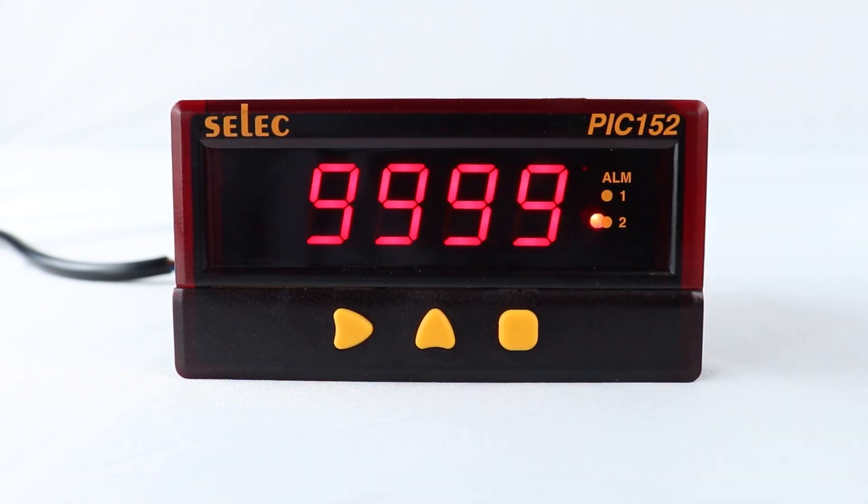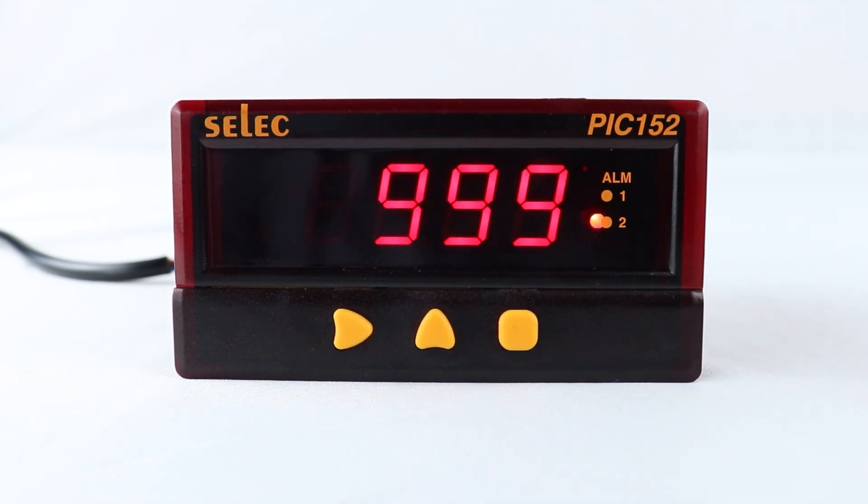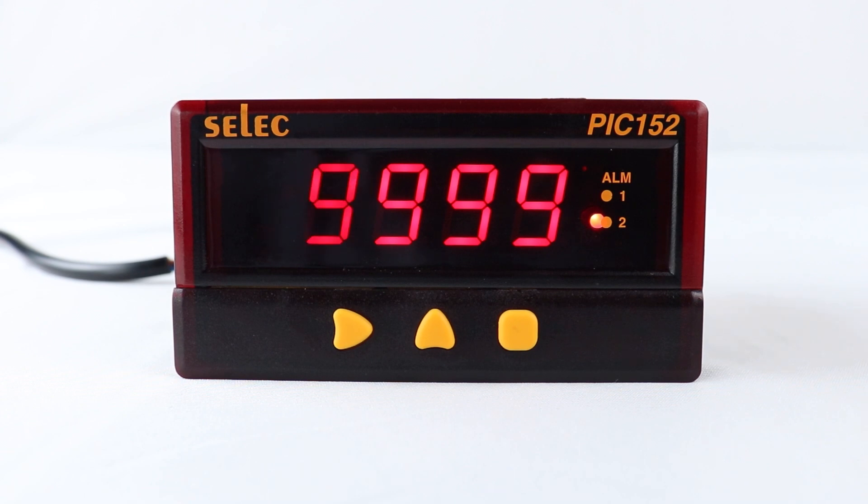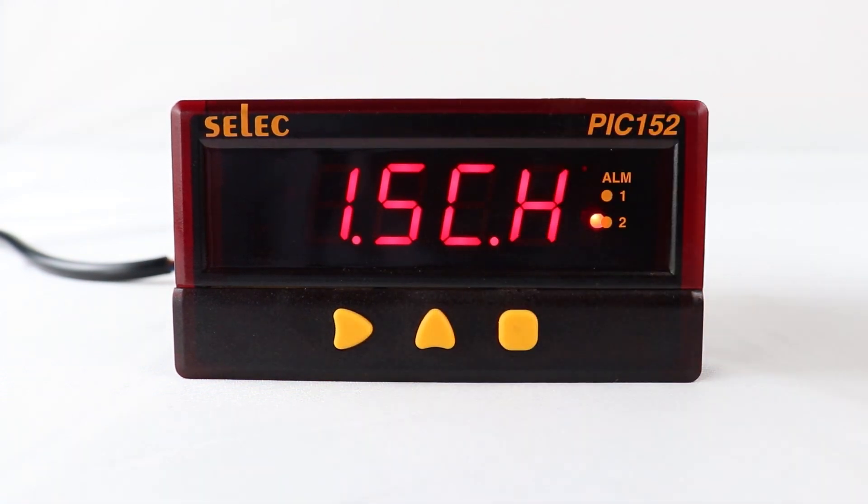Next is display value scaling point B at low, DSCL, as 9999. Next press square key to select input value scaling point B at low, DSCL, as 20 milliamperes with up arrow key.